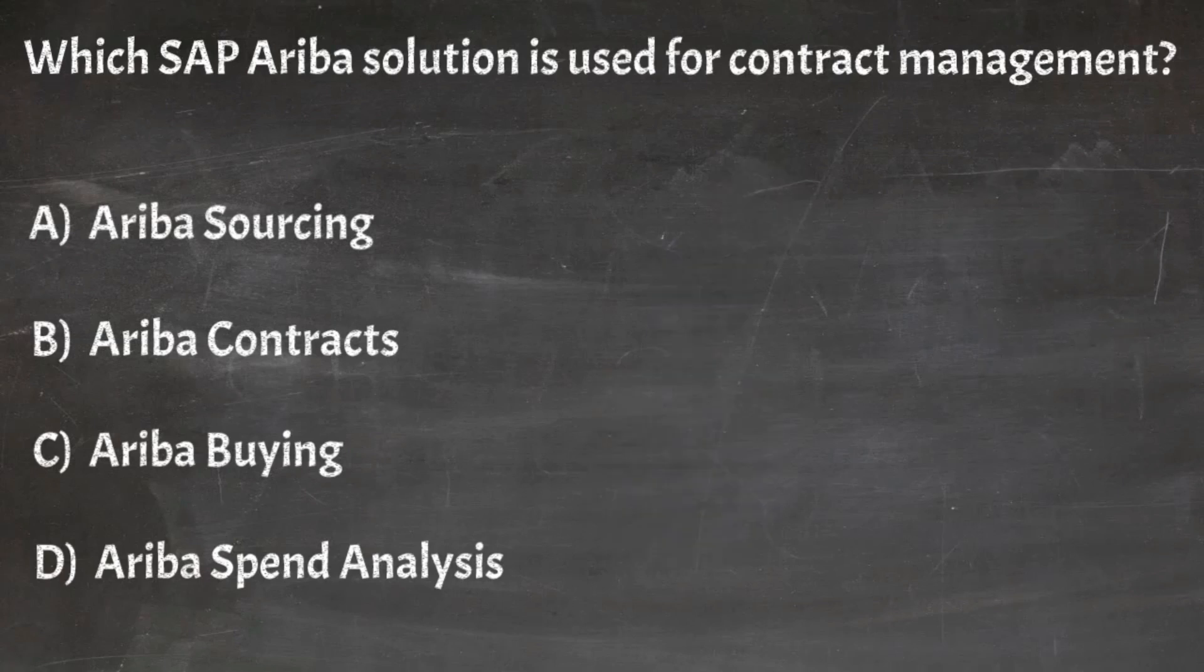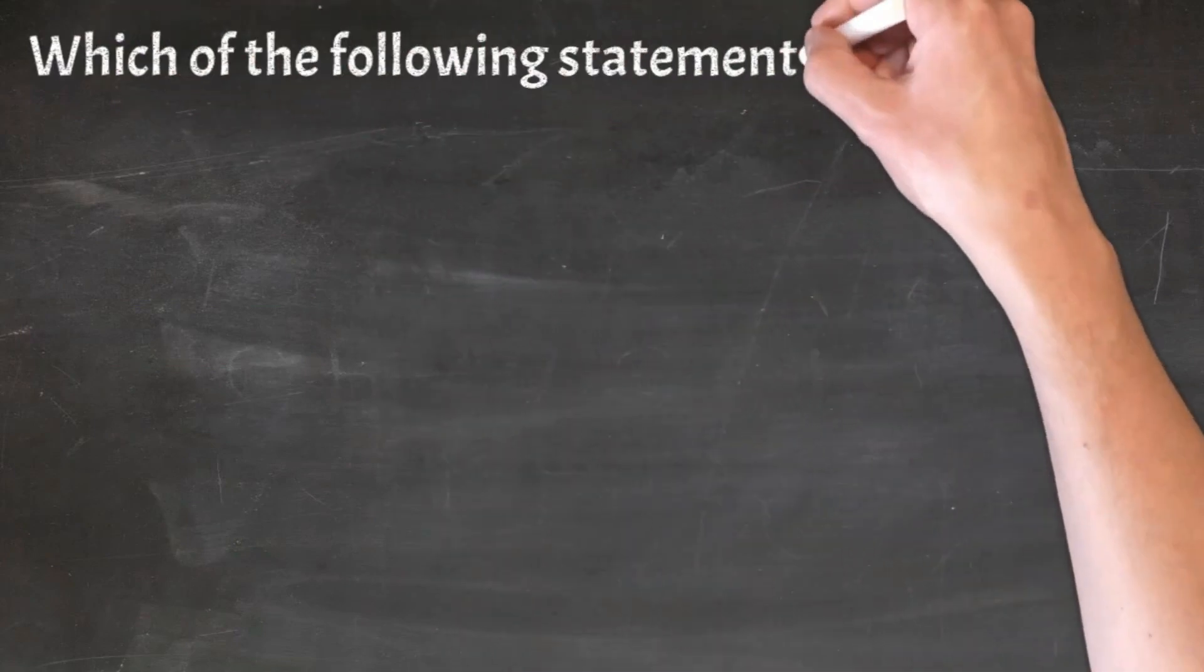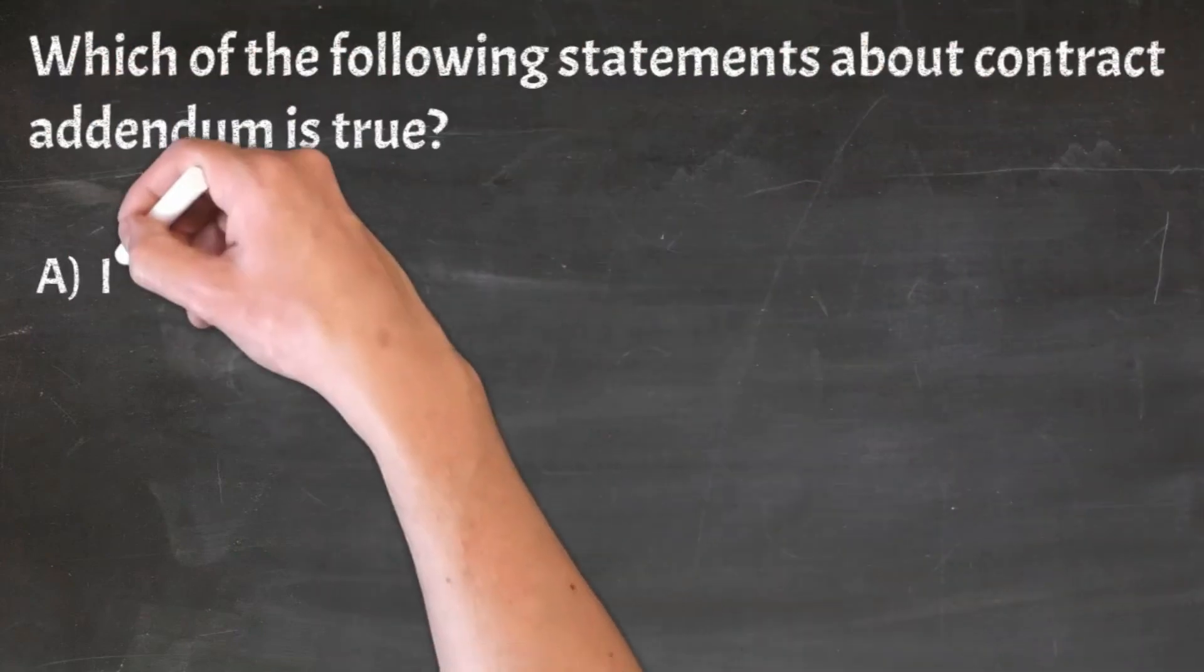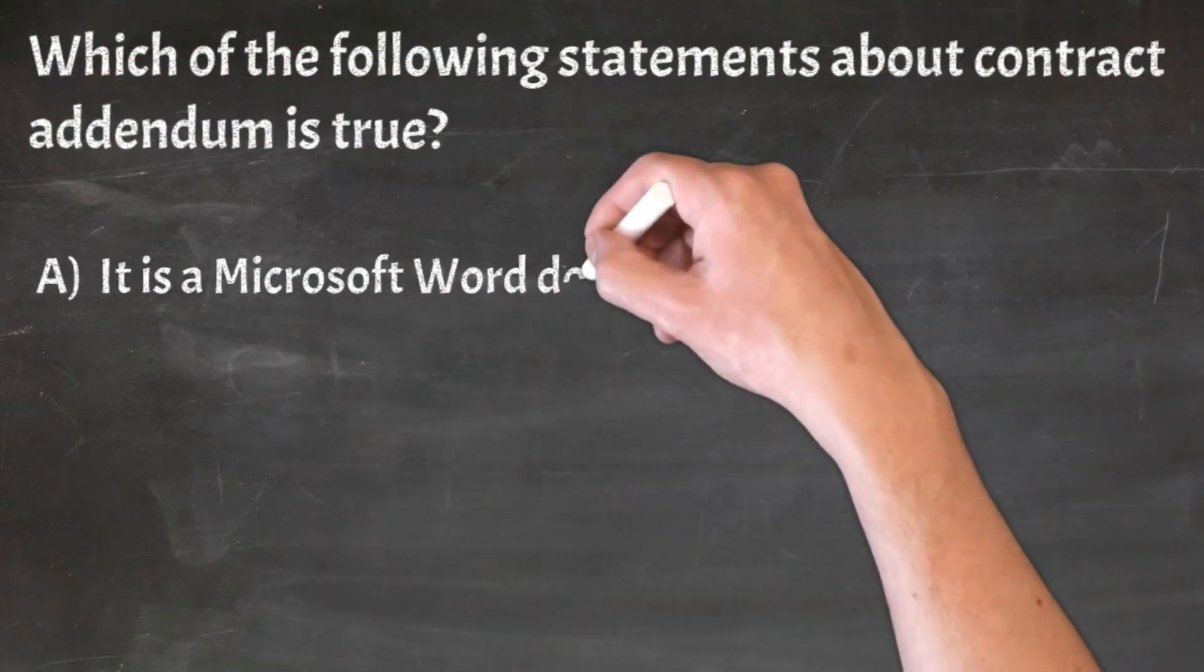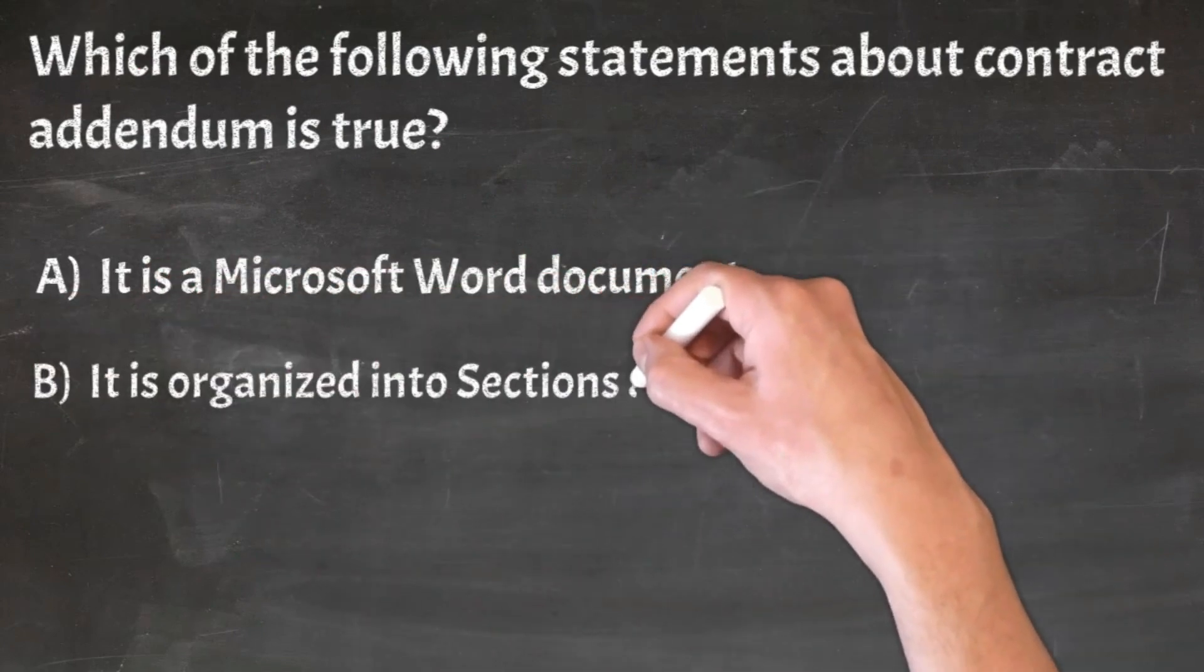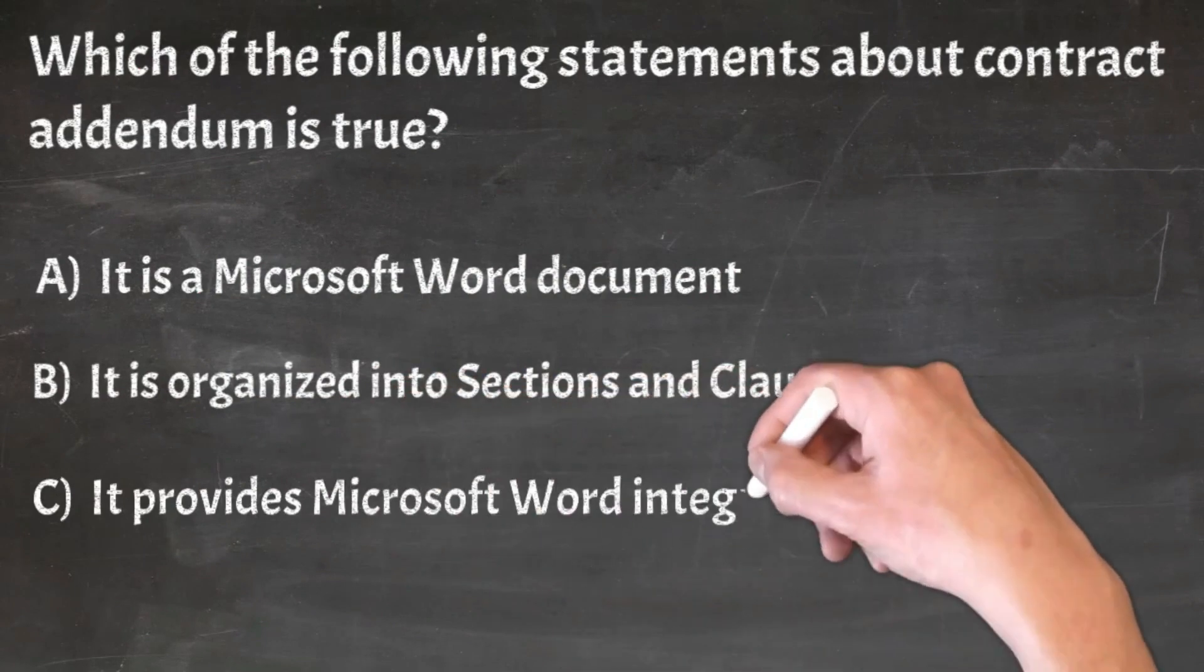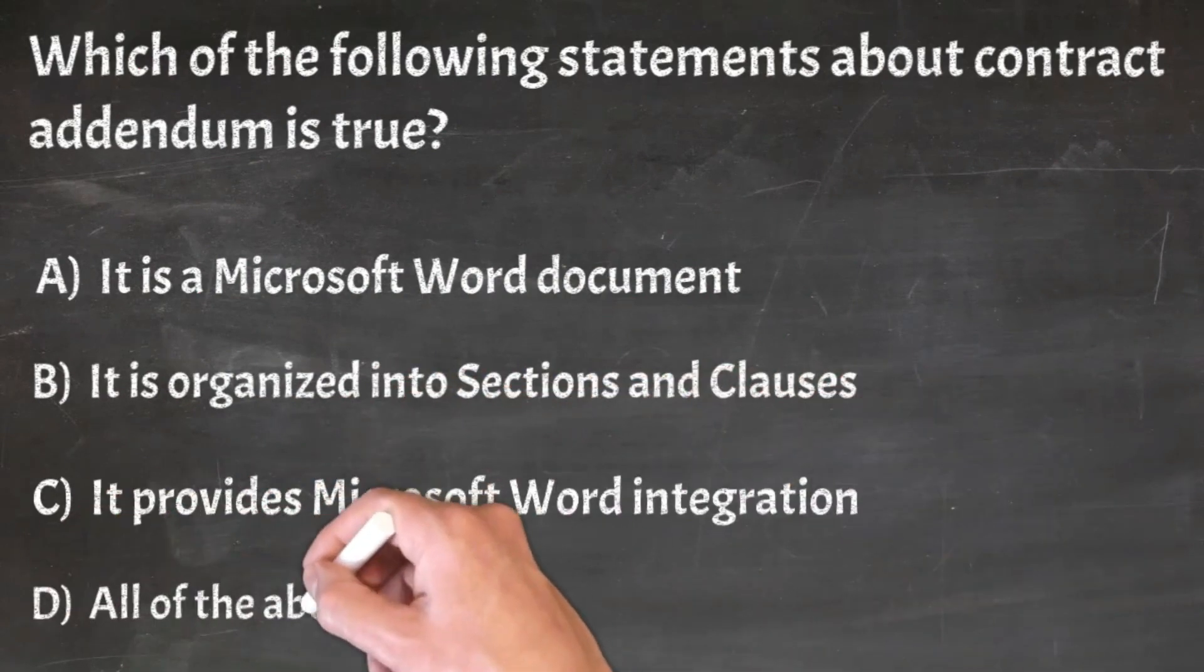Correct answer: B. Ariba contracts. Question 29: Which of the following statements about contract addendum is true? A. It is a Microsoft Word document, B. It is organized into sections and clauses, C. It provides Microsoft Word integration, D. All of the above.